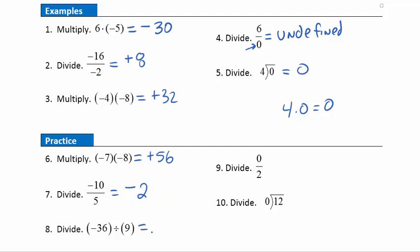Question 8: different signs, so negative answer. 9 goes into 36 four times, so negative 4. Question 9: we're starting with 0 and dividing that into two parts — we can do this. We can split 0 into two parts; each of those parts would have 0.